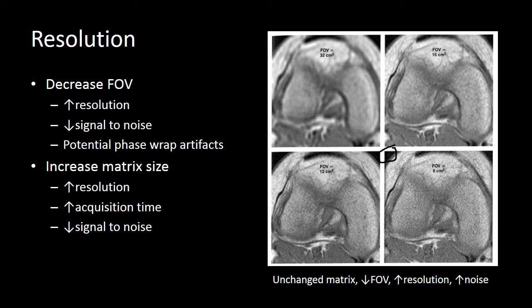You could take a different approach in which instead of decreasing your field of view, you increase your matrix size. But to increase your matrix size, you're going to have to increase your acquisition time. There's going to be more lines of k-space in the phase-encoded direction, and those additional lines of phase-encoded k-space are going to require additional time.